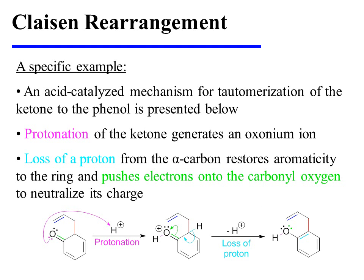That tautomerization requires only a trace of acid or base. On this slide, an acid-catalyzed mechanism for the tautomerization is shown. The process begins with protonation of the ketone oxygen. Loss of a proton from the alpha center then restores aromaticity to the ring and pushes pi electrons onto the carbonyl oxygen to neutralize its charge. This is how the phenolic product is formed.